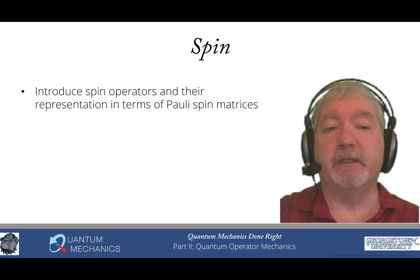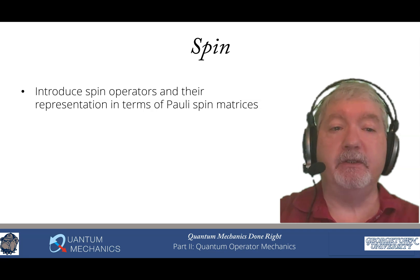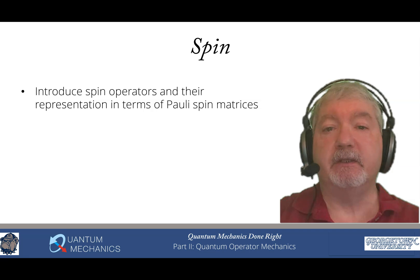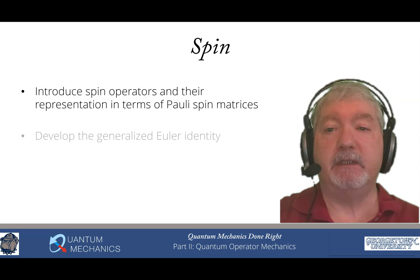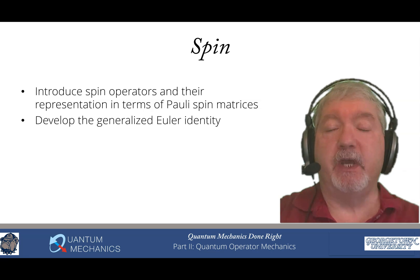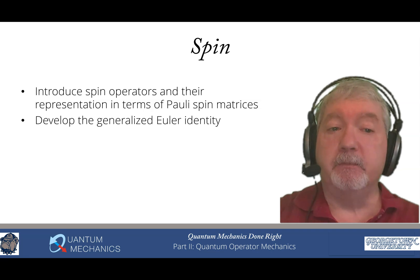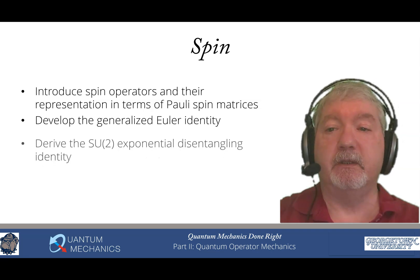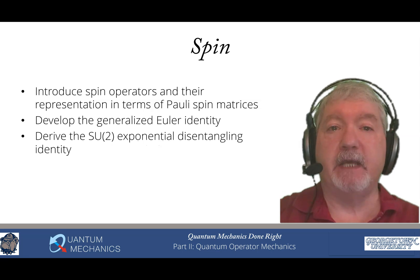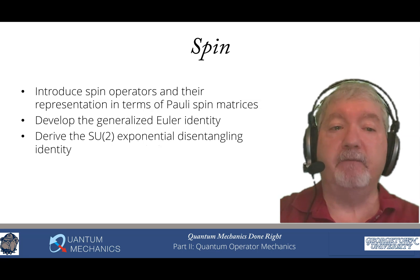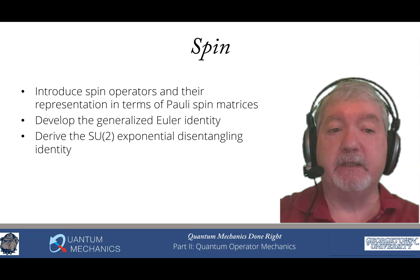Next, the chapter on spin: we use careful arguments to describe why we need operators to describe spin and how they're represented in terms of what are called Pauli spin matrices. We then develop a generalized Euler identity — very similar to the Euler identity for complex numbers, but a little bit different because it involves matrices. We then derive the SU exponential disentangling identity. Most of you have never seen this, even if you've taken lots of quantum mechanics classes. I had been doing research in quantum mechanics for at least 20 years before I'd even heard of it, but it's a really powerful thing and everyone should know about it.